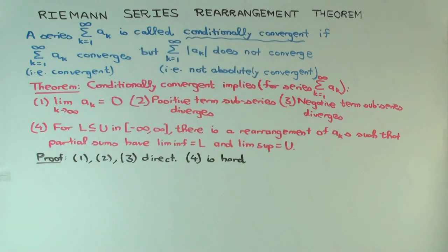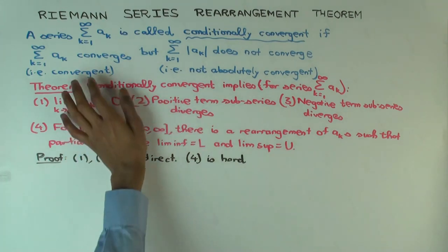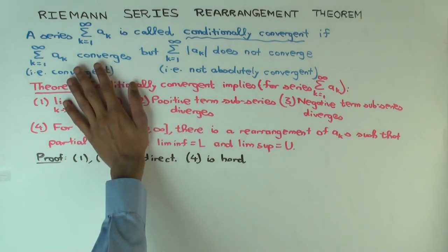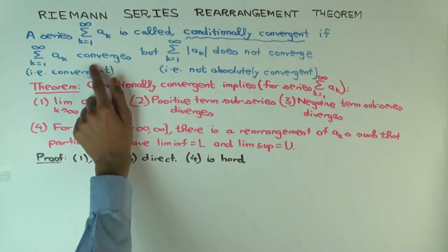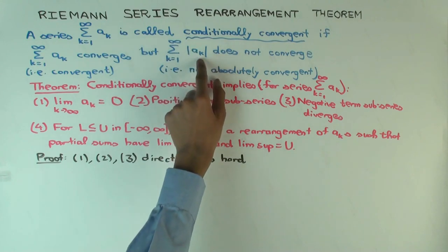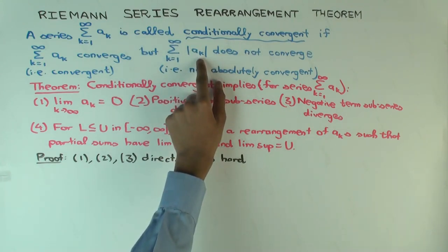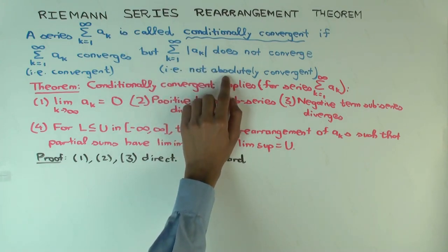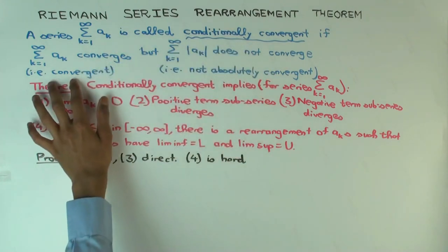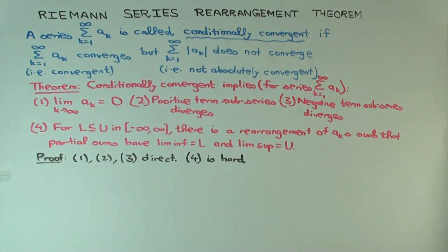If a series sum exists, we say the series converges. The series is called conditionally convergent if it converges, but the series of absolute values of the terms does not converge. If the absolute value series converges, it would be called absolutely convergent. So conditionally convergent means convergent, but not absolutely convergent.